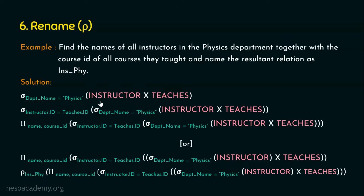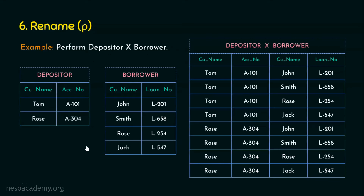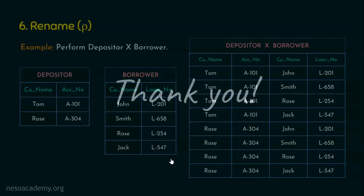In case we want to rename the instructor relation as ins, it is simple: rho with ins in the subscript, and instructor as the expression inside. This means the instructor relation will be renamed as ins. For homework, you are required to rename the output of the depositor cross borrower relation with a new name — let the name be output_relation. Solve this and post your answers in the comment section. I hope you enjoyed this presentation, thank you for watching.